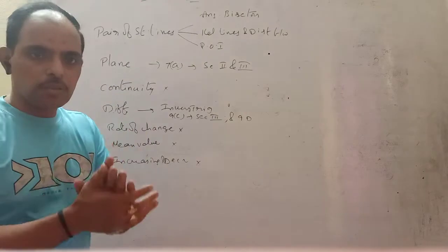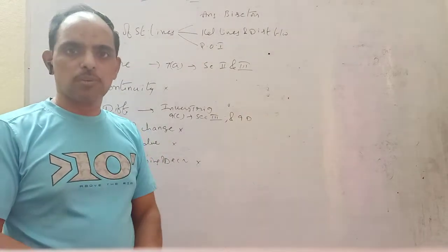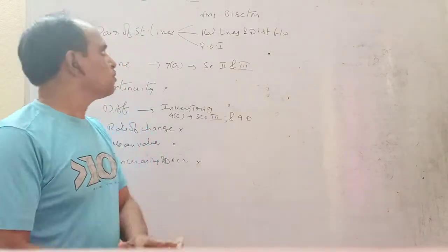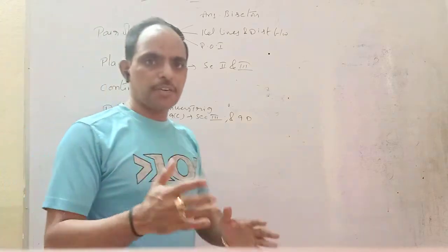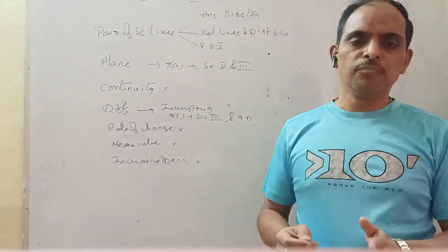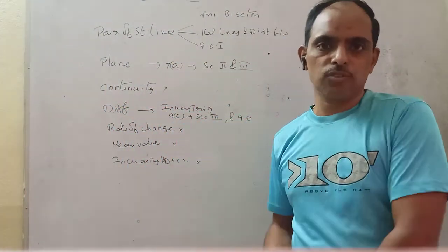In the 1B syllabus, certain topics have been reduced. First, let's look at geometry. In 1B, there are two parts: geometry and calculus.